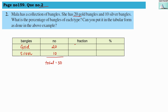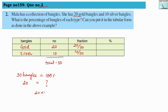We represent this as a fraction: desired quantity divided by total quantity. So gold is 20/30 and silver is 10/30. To convert to percentage, we multiply by 100. If 30 bangles are 100 percent, then for 20 bangles, what will be the percentage?